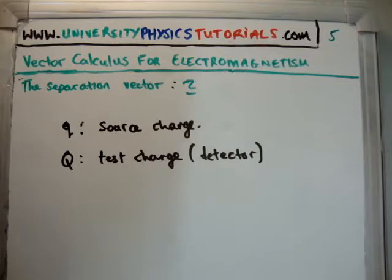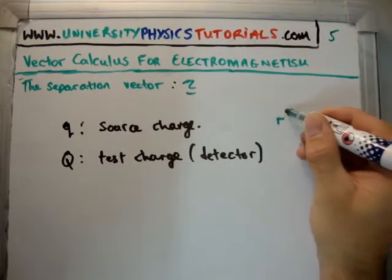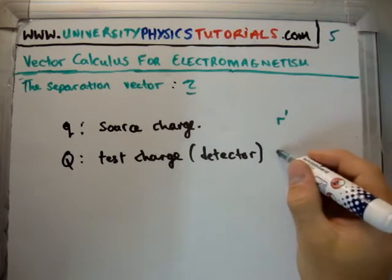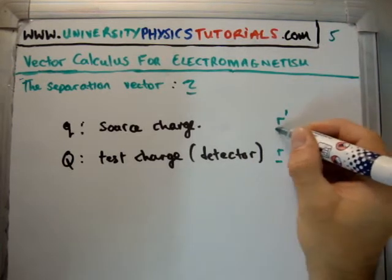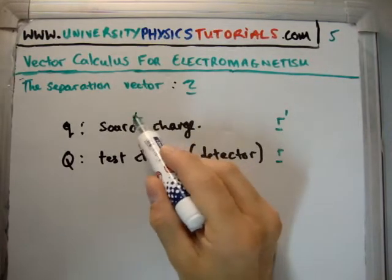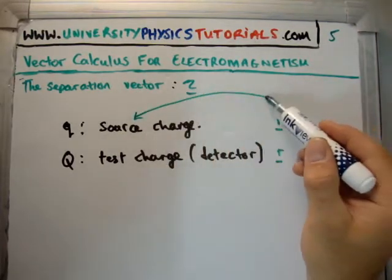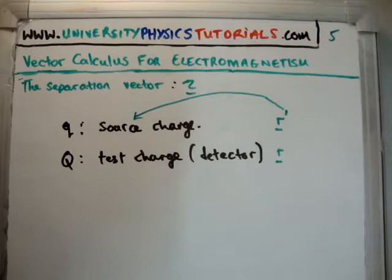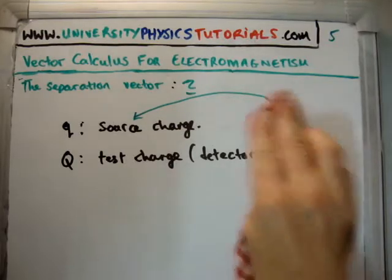So what we do is, we like to describe things using vectors. So we describe the vector which goes from the origin to the source charge as r' and the vector which goes from the origin to the test charge as r. They're both vectors. Now why do we say prime? So you should know from now on that anytime a variable is primed, it's associated with a source of some form, and that's very important.